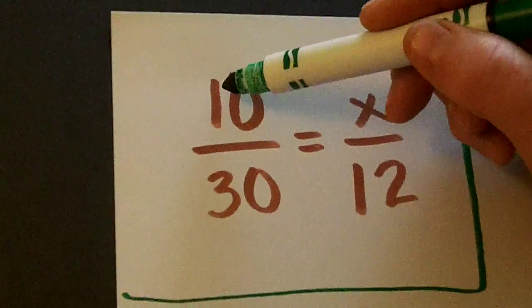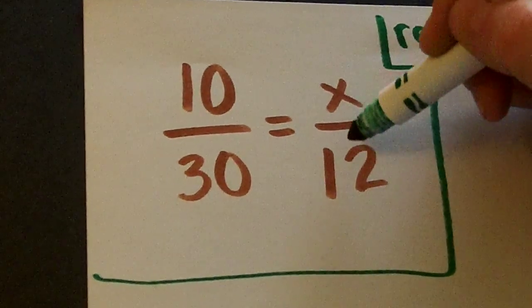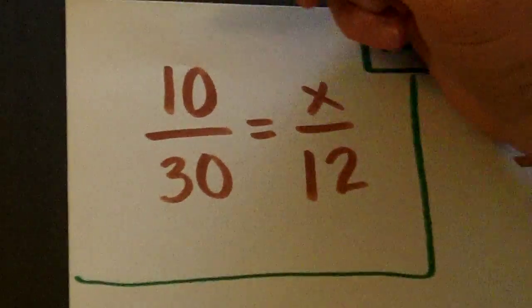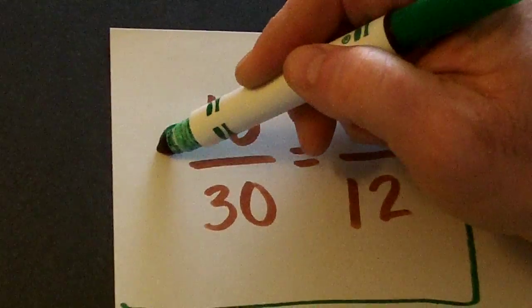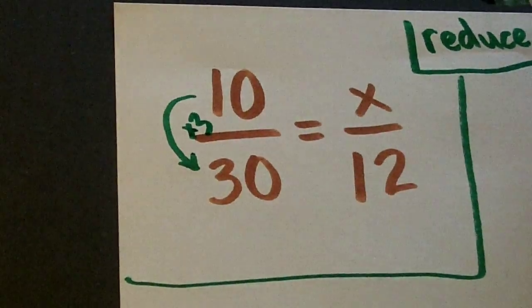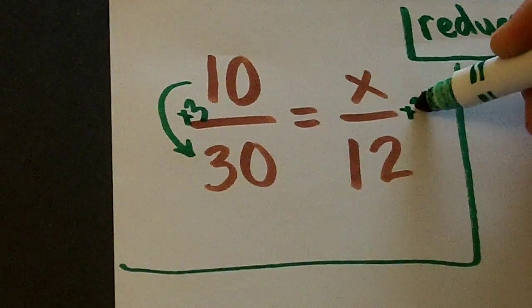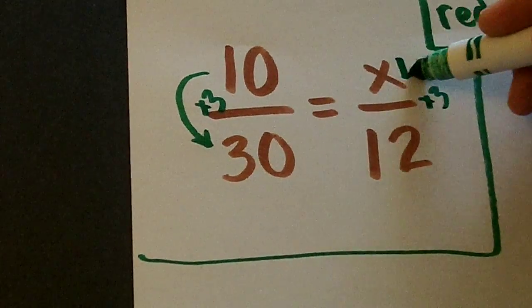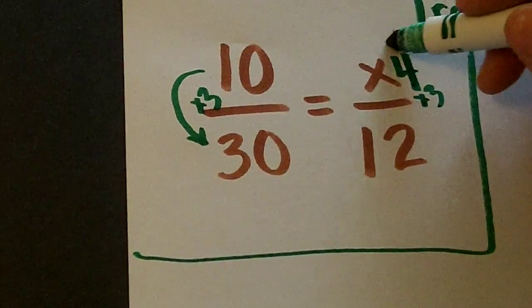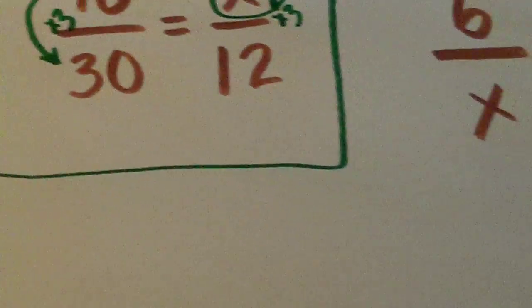Now watch this. Let's say we have 10 of something equals 30, X of that first something equals 12. So we say, how does 10 become 30? We multiply by 3. So what number times 3 is equal to 12? 4. 4 is X. Was that real easy? Yes.